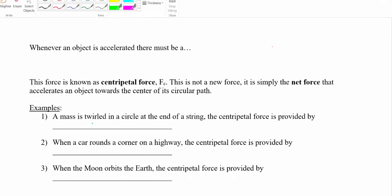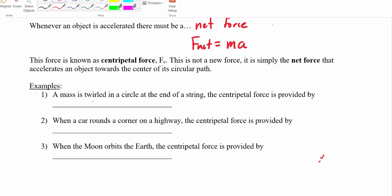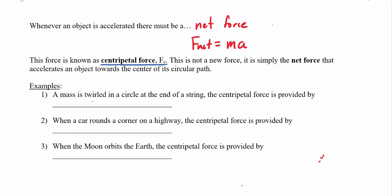Whenever an object is accelerating, Newton's second law tells us there must be a net force: F = ma. For centripetal motion, we call this the centripetal force, Fc. This is not a new type of force like gravity or friction — it's simply the net force acting inward. There's no single formula for Fc; you have to identify what's providing it in each situation.